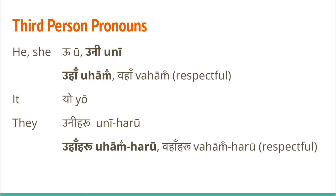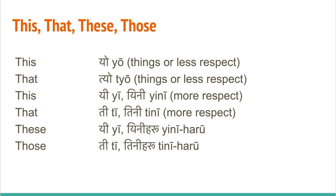For demonstrative pronouns — this, that, these, those — 'yo' is mostly used for things or shows less respect if used for a person. Similarly, 'tyo' means that, and also shows less respect for a person. If you use 'yo' or 'tini' for this or that, there is more respect. They can also mean plural — uni haru, tini haru. So 'et' can mean this or that with respect, or these and those. 'Uni' and 'tini' are respectful ways of saying this or that, and uni haru and tini haru mean these or those. Thank you for listening, see you next time.